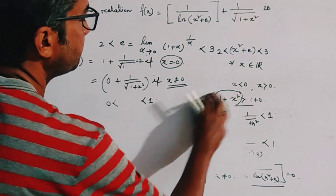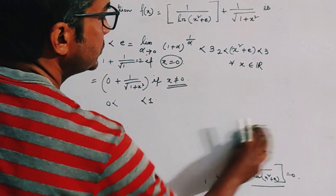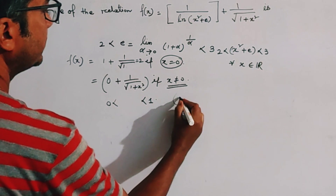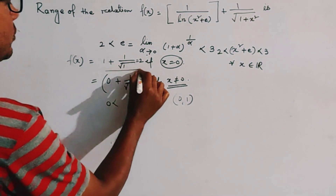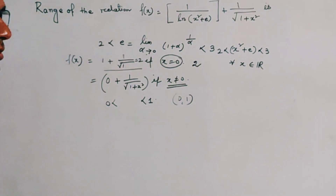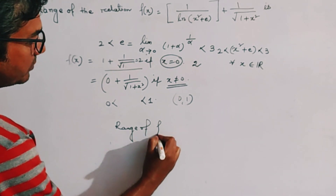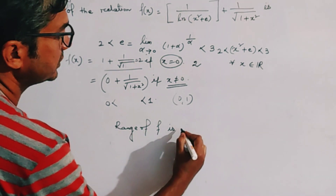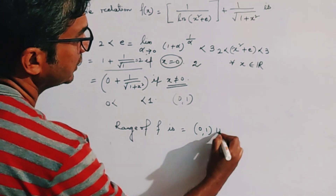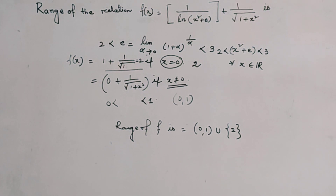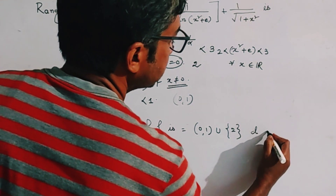The range of the function f(x) is the interval (0,1) from the x ≠ 0 case, together with the single value {2} from the x = 0 case. So the range of f is (0,1) ∪ {2}. This corresponds to option D, so option D is correct.